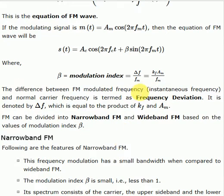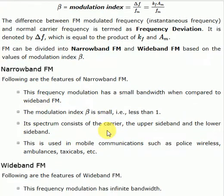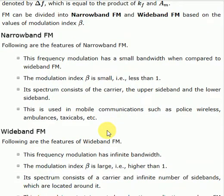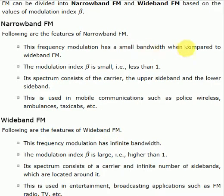There are two types of FM. One is narrowband FM and the other is wideband FM. Just like amplitude modulation where modulation index less than 1 is under modulation and greater than 1 is over modulation, here if β is less than 1, it's narrowband FM. Narrowband FM has a small bandwidth when compared to wideband FM. The modulation index is small, less than 1. Its spectrum consists of carrier, upper sideband, and lower sideband. It's used in mobile communications.